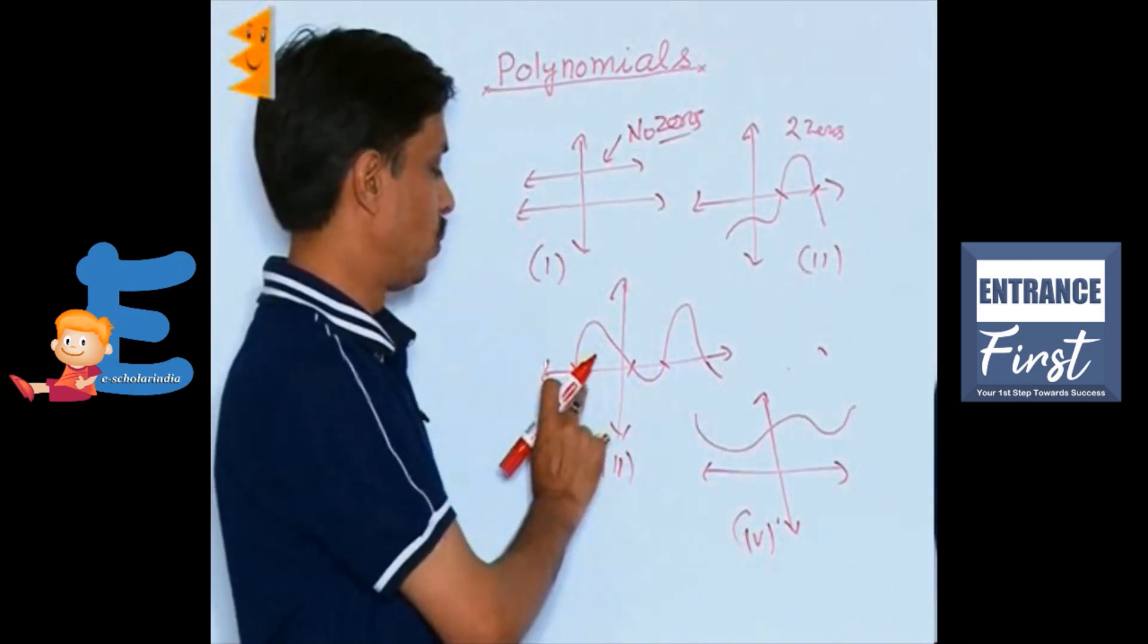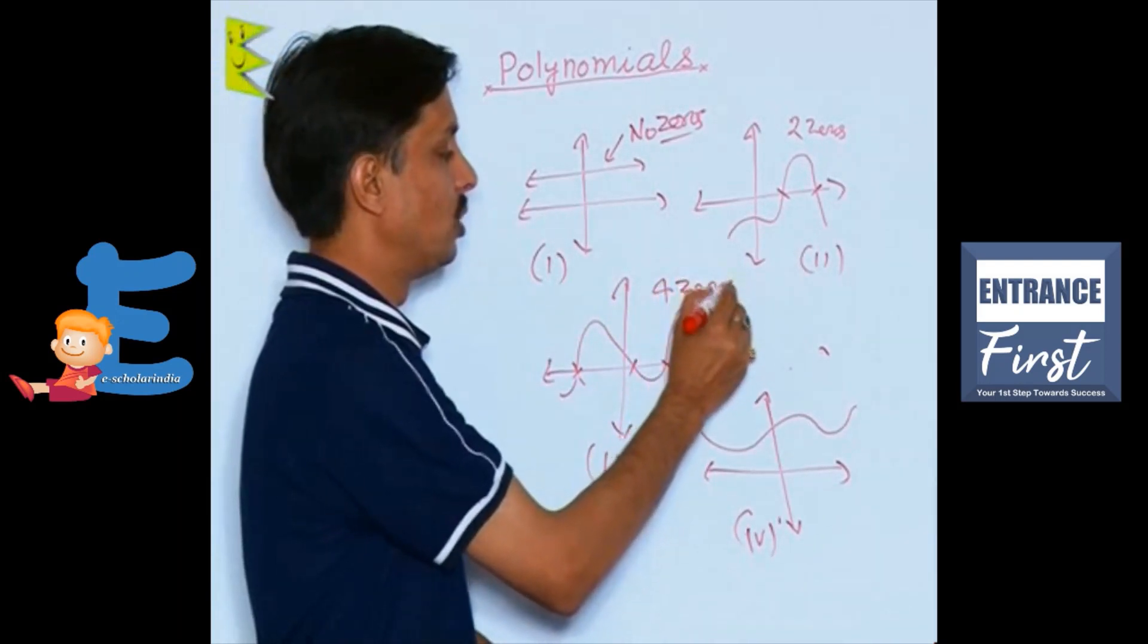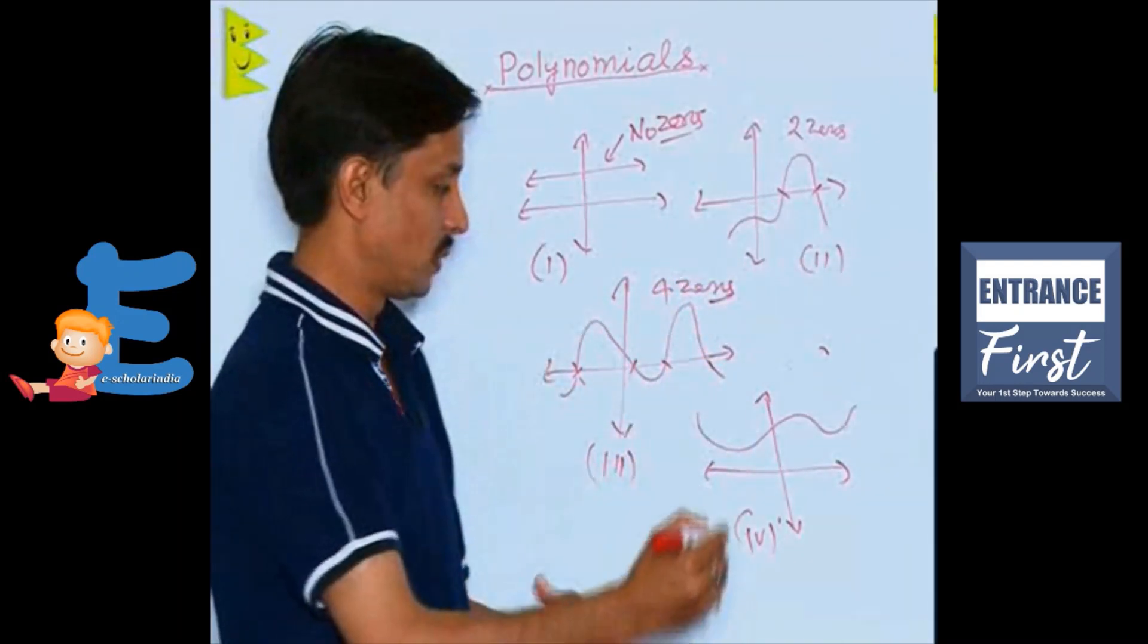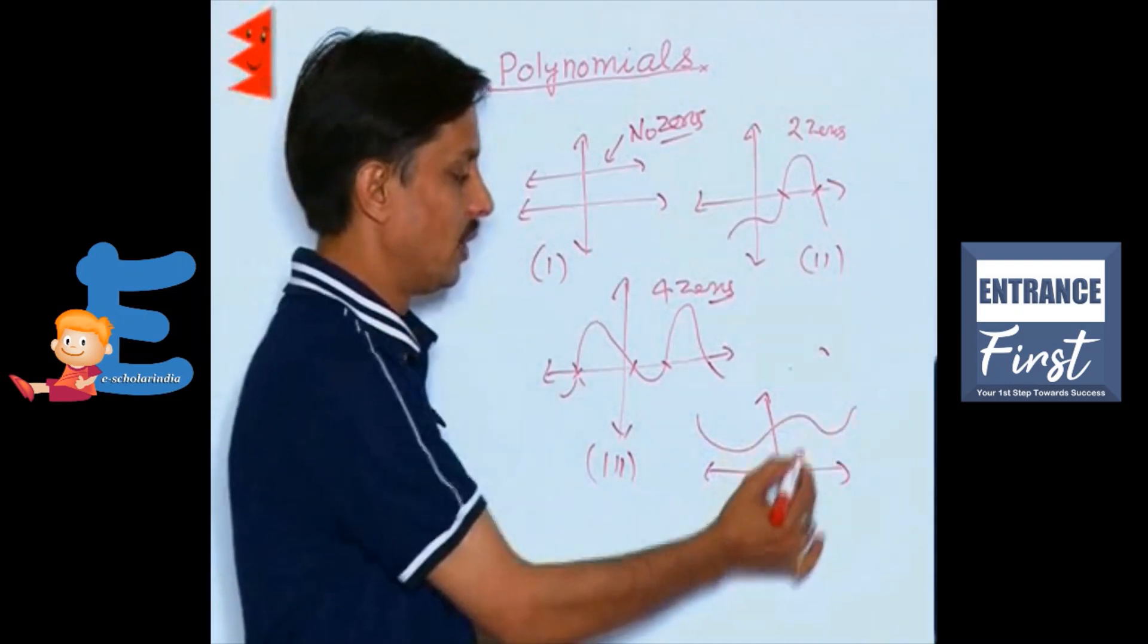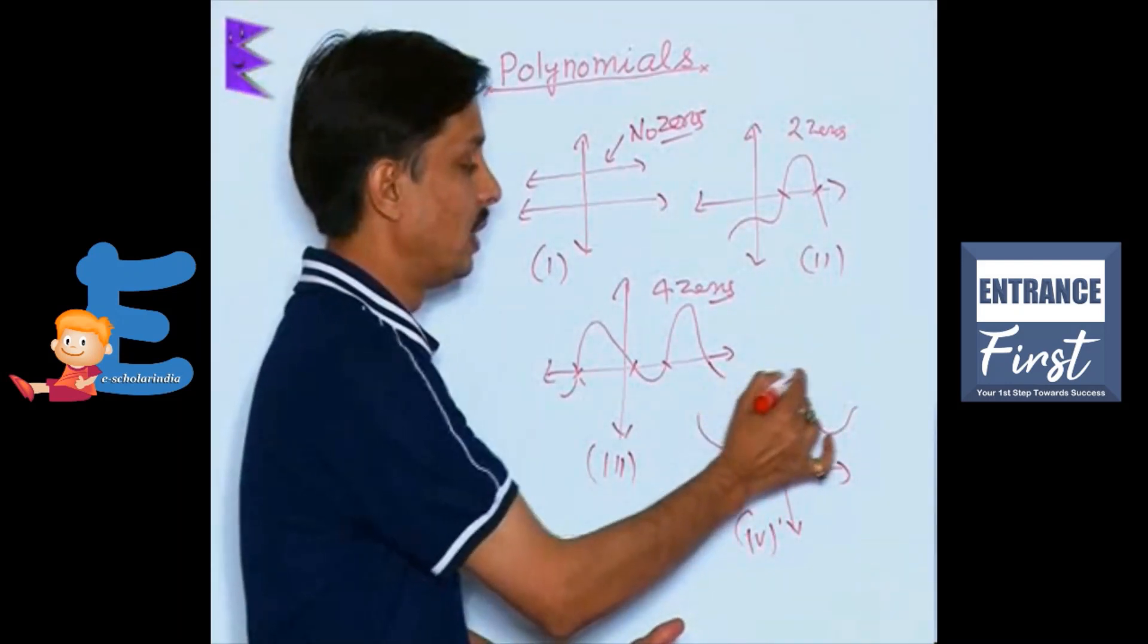You can say this graph has 1, 2, 3, 4, four zeros. It has how many zeros? Four real zeros. And if you notice here this is also not cutting anywhere, so it does not have any zero.